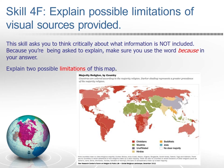Finally, our last skill for skill category four is skill 4F: explain possible limitations of visual sources provided. This skill asks you to think critically about what information is not included. Because you're being asked to explain, make sure you use the word 'because' in your answer. Try this one: explain two possible limitations of this map of majority religion by country, where countries are colored according to the majority religion and darker shading represents a greater prevalence of that majority religion.